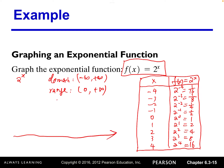Now we create a rectangular coordinate system with an x-axis, y-axis, and origin at 0. We plot our points: the point (0, 1), then (1, 2), then (2, 4), then (3, 8), and so on.